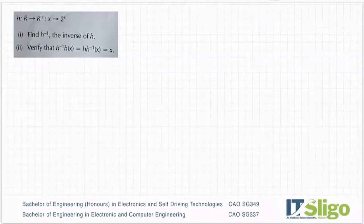Okay, let's have a look at this one. So we have a function h(x) = 2^x. It asks to find h inverse, the inverse of h, and then we must verify that h^(-1)(h(x)) is the same as h(h^(-1)(x)), which is the same as x.